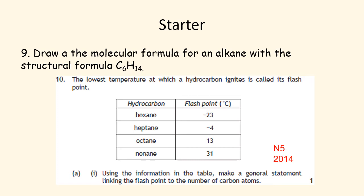For drawing the structure of C₆H₁₄, you should have six carbons in a line: the first carbon with three hydrogens, then the next four each with two hydrogens, and the sixth with three hydrogens. For the table question, looking at heptane, octane, and nonane, as the number of carbon atoms increases, the flashpoint also increases. You don't need to quote a specific number — it's just a general trend: as the length of the carbon chain increases, the flashpoint increases.